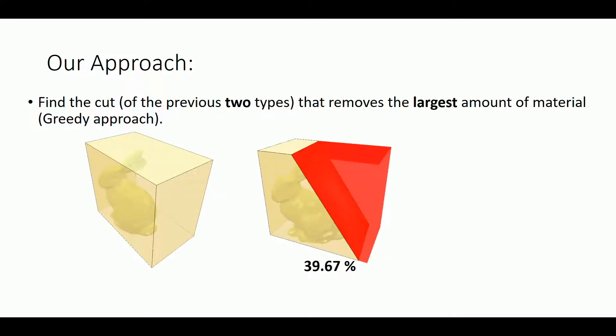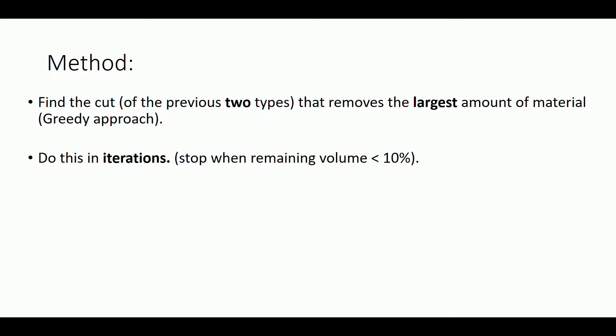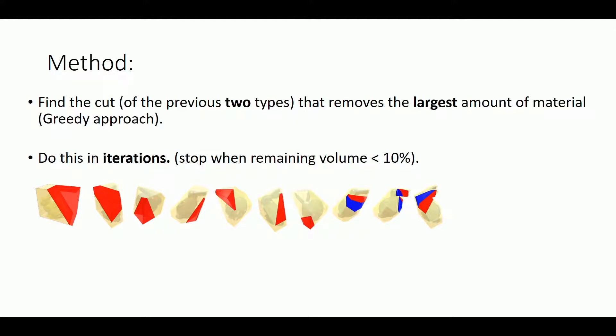Our approach is to find the cut of the previous two types that removes the largest amount of material. For example, this is the cut that removes the largest amount of material in the initial step, which is a greedy approach. Then we do these iterations. We stop when there's some stopping condition or when the user decides to move to the next stage.